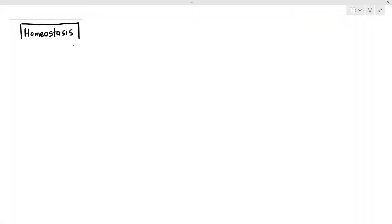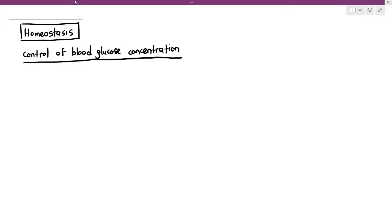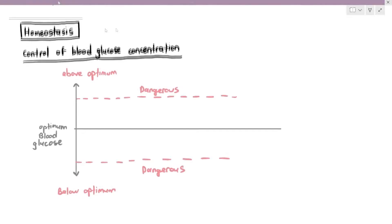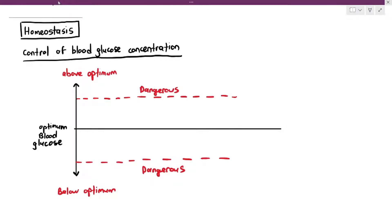In homeostasis, we also have to talk about the control of blood glucose concentration — maintaining the optimum blood glucose concentration in our body. Looking at this graph, we have the optimum blood glucose concentration, above optimum, and below optimum. Above optimum means the blood has too much glucose; below optimum means the blood has very little glucose. The red dotted line means that if it goes beyond that level, it's too dangerous for the body.